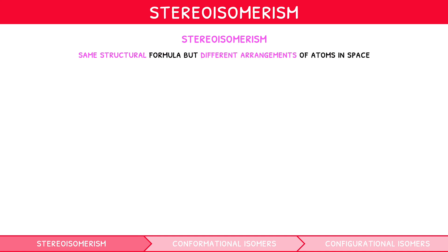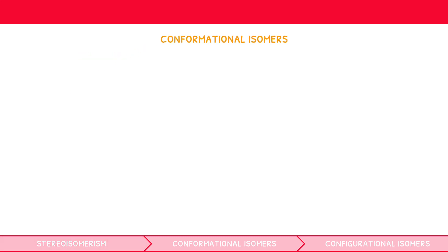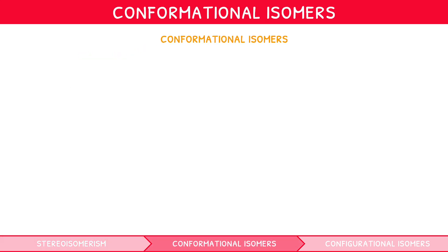Broadly, all stereoisomers can be divided into two categories: conformational and configurational isomers. Let's get started with conformational isomerism.